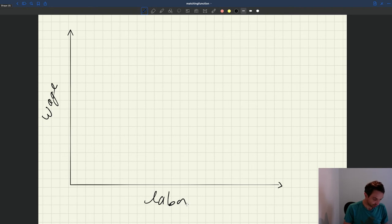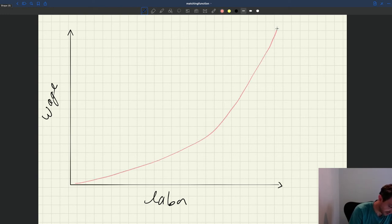Usually you'll have supply, you'll have demand, so the labor supply is going to be usually an increasing function of the wage, and then you'll have a labor demand that's a decreasing function of the wage, something like this.